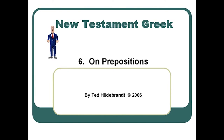Welcome to Chapter 6 on prepositions. We're building up our repertoire of words, being able to work with present active indicative verbs, and now we've got the nouns down — the masculine, feminine, and neuter nouns in the second declension and first declension. We've learned the cases, and the cases will come into play here with these prepositions. One little secret about Greek is it's not the big words that get you — it's the little ones. These prepositions can be tricky at times, so we really need to master them as they're very prevalent in Greek.